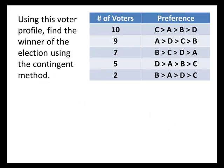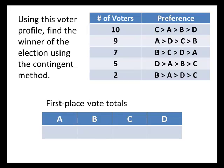Here's another example — again, we're given a voter profile and must find the winner using the contingent method. Finding the first place vote totals: A has nine first place votes, B has nine (seven from the third row plus two from the last row), C has ten first place votes, and D has five. C is in the lead, but then there's a tie for second between A and B. So we don't have a clear top two — instead we have a top three. We eliminate D, leaving A, B, and C.